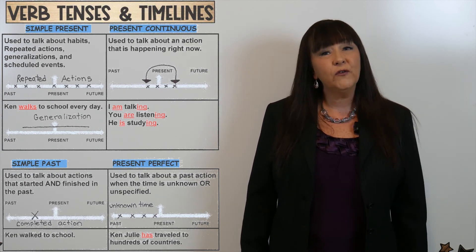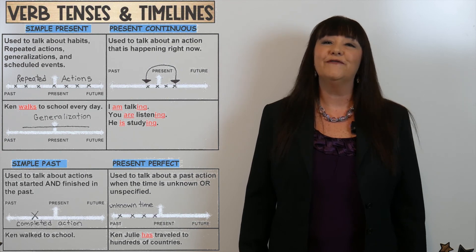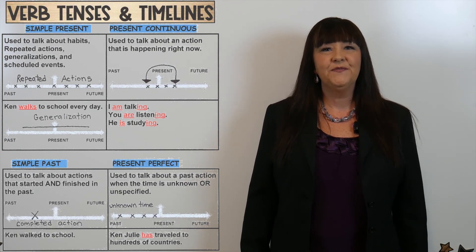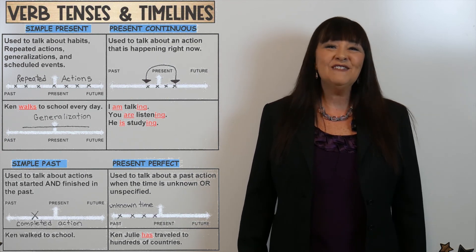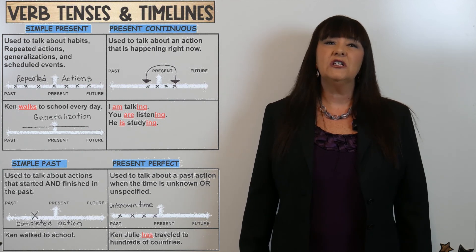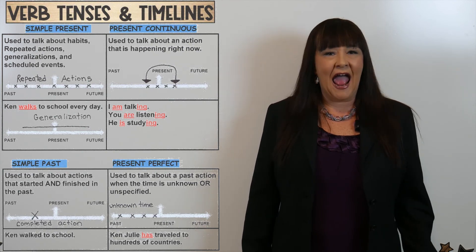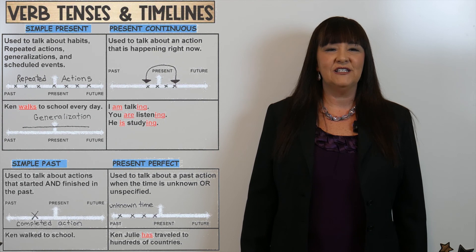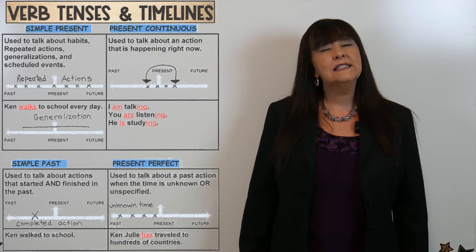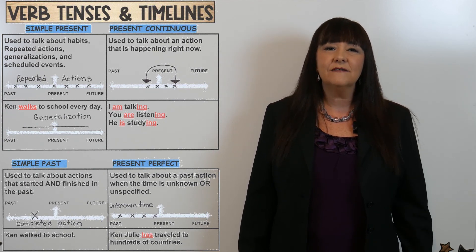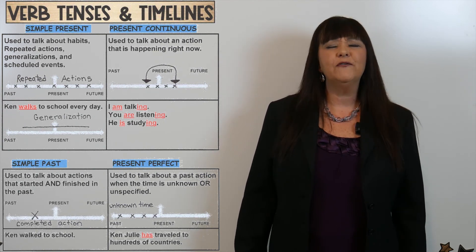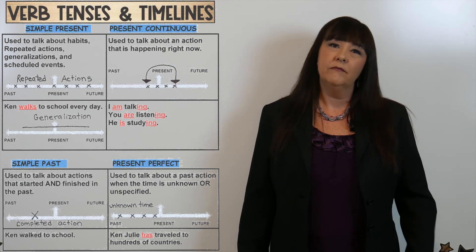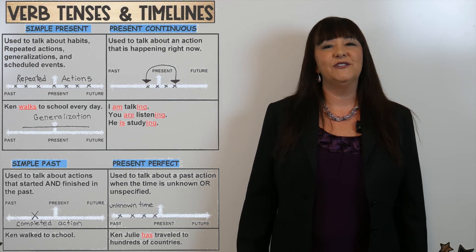Let's look at the first type of verb, the simple present. The simple present is used to talk about habits, repeated actions, and scheduled events. We often use the word "every day" before we use this tense.